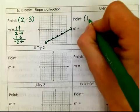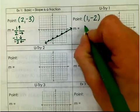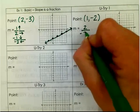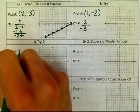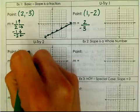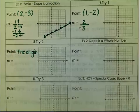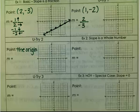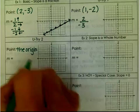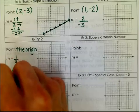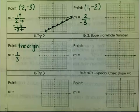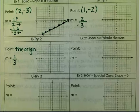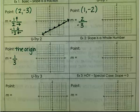You try 1: start with the point (1, −2) and use the slope 2 over negative 3, or negative two-thirds. You try 2: use the origin as your point — look at the front to remind yourself where that ordered pair should be — and your slope is positive 1/3. Pause your video, try problems 1 and 2, and resume to work on example 2.